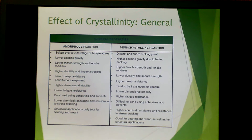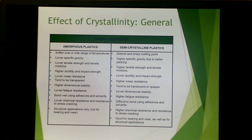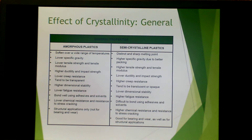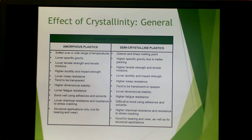Here are some general effects of crystallinity. Semi-crystalline plastics show a distinct and sharp melting point rather than softening over a wider range. They tend to have higher specific gravity, higher tensile strength and tensile modulus. They are less ductile and have lower impact strength, higher creep resistance, and tend to be translucent. They have lower dimensional stability, higher fatigue resistance, and are more difficult to bond using adhesives and solvents. They tend to have higher chemical resistance, resistance to stress cracking, and are good for bearing and wear applications.